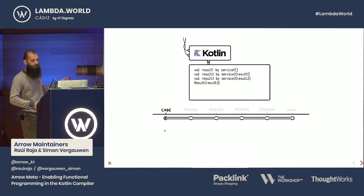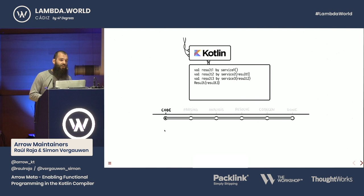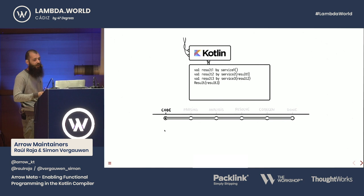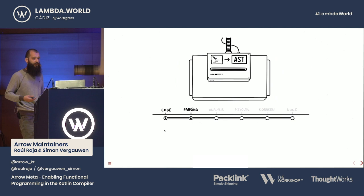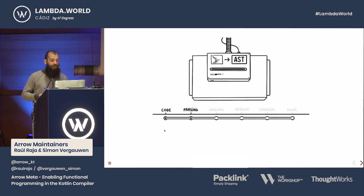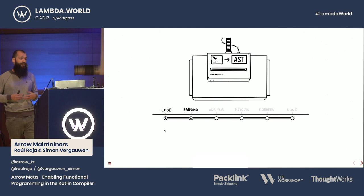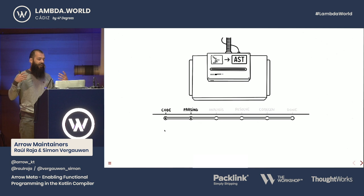Before the Kotlin compiler can do anything, we first need to write our program. The program you see here is what we envision the comprehension syntax could look like for Kotlin in 2020. Once we have written our program, the compiler goes into the parsing phase. During the parsing phase, the compiler will read the code from disk and parse it into an AST. An AST, or abstract syntax tree, is a tree representing the structure of the code — in this case, for Kotlin. The Kotlin abstract syntax tree is built upon the PSI library by JetBrains, which is the Program Structure Interface that IntelliJ uses internally in all their tooling.